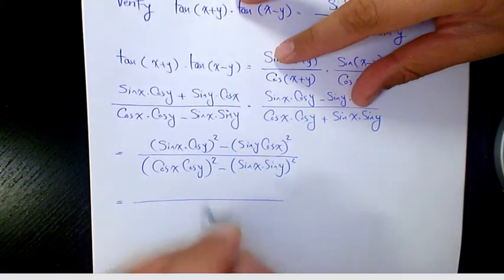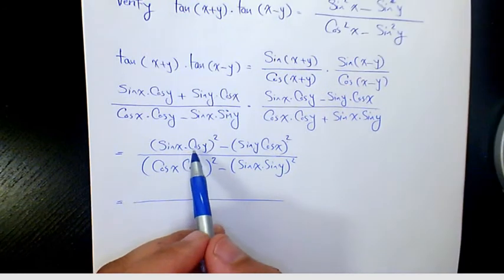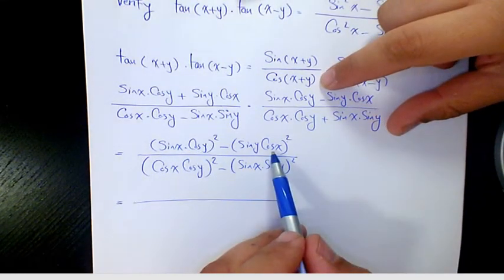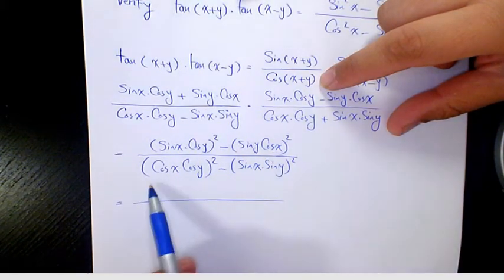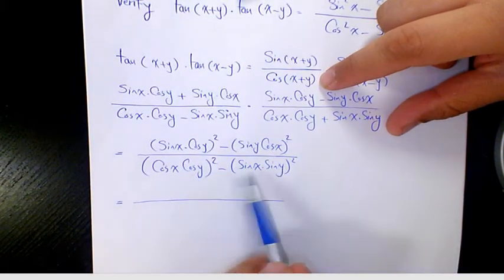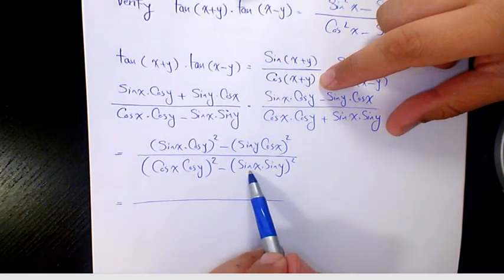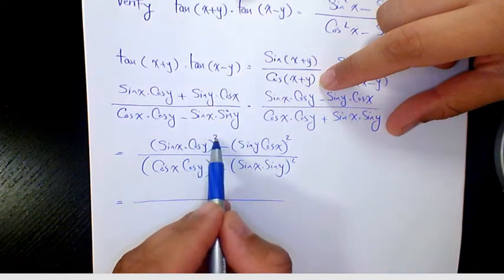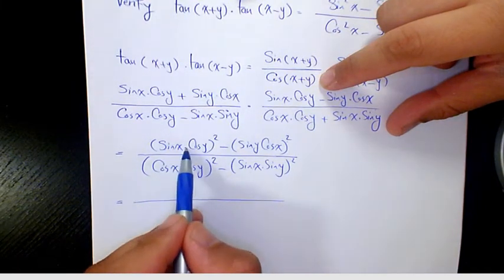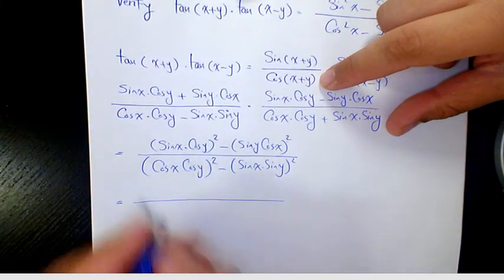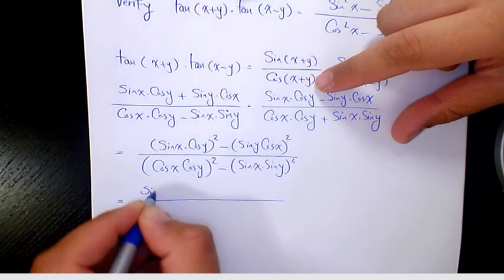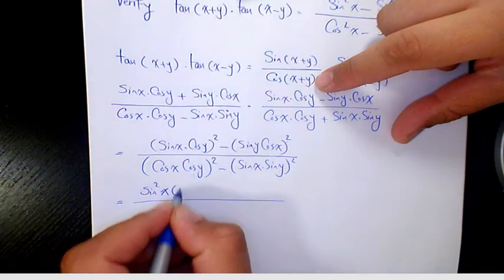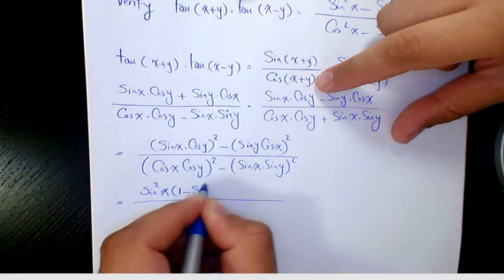Then what I'm going to do is change cosine(y) to sine and cosine(x) to sine(x). So sine(x) times cosine(y) squared is the same as sine squared(x) times cosine squared(y). That's going to be sine squared(x) times one minus sine squared(y), using the Pythagorean identity.